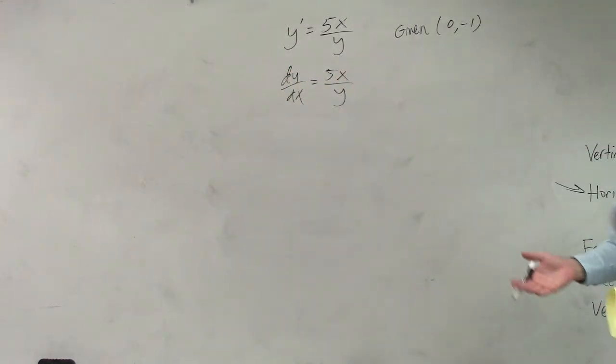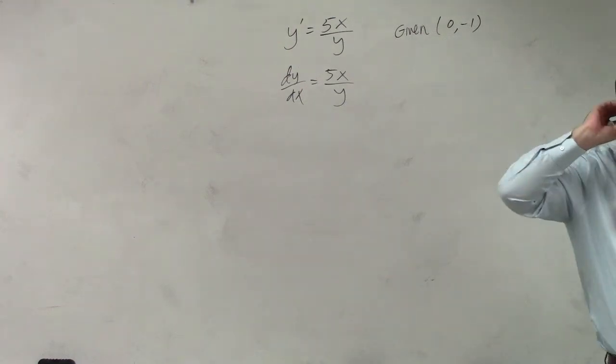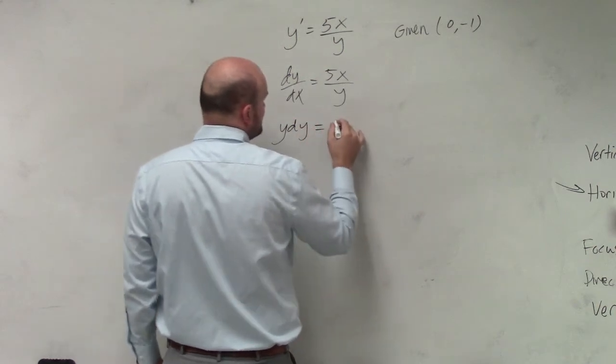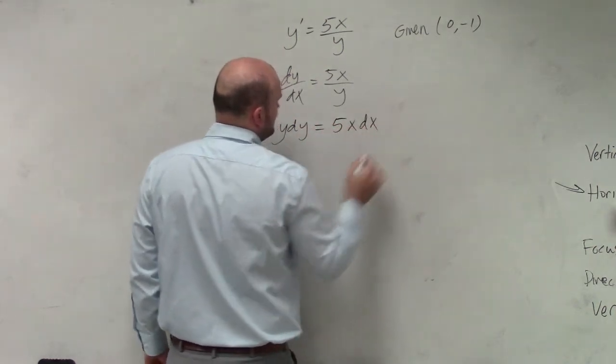So that goes in and helps us now to go ahead and get our x's and our y's to the same side. I can multiply by dx on both sides and multiply by y on both sides. So therefore, I have y dy equals 5x dx.